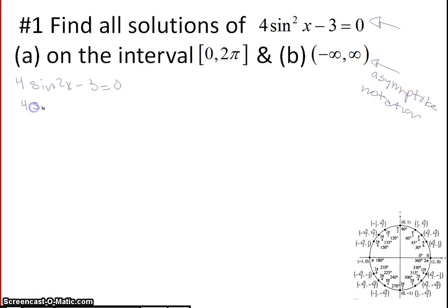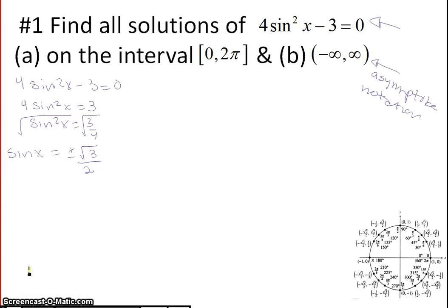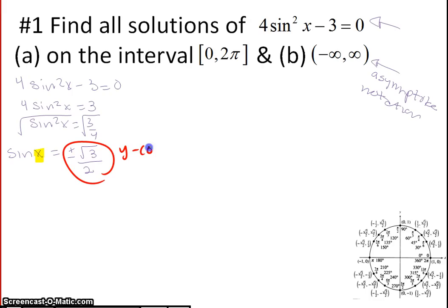We're going to add 3 to the other side: 4 sine squared x equals 3. Divide by 4 — sine squared x equals 3 fourths. We're going to take the square root of both sides. And remember, when you take the square root of both sides, you end up with plus or minus the square root. So we end up with sine of x equals plus or minus square root 3 over 2. We want to find the angle where the y-coordinate — because it's sine — equals negative root 3 over 2.